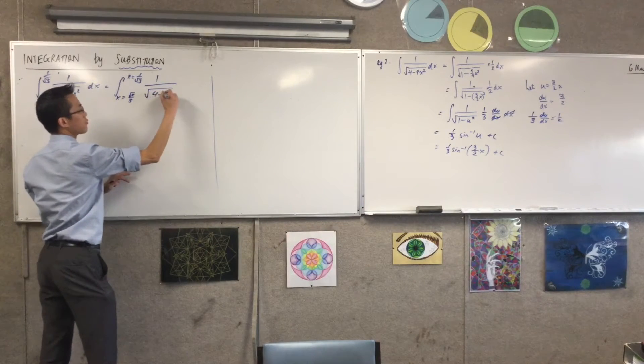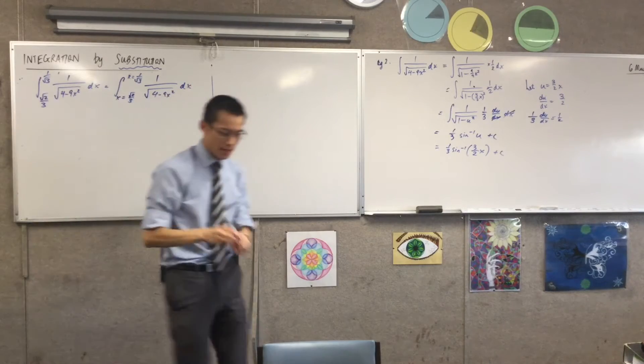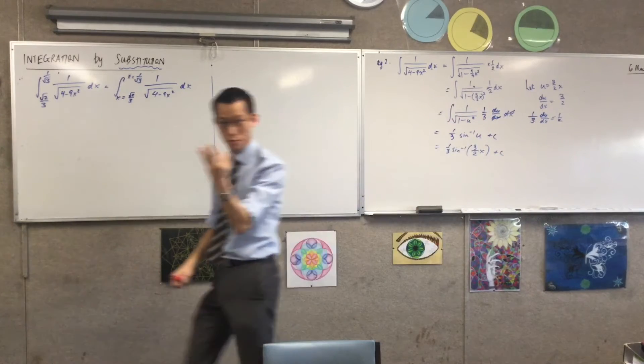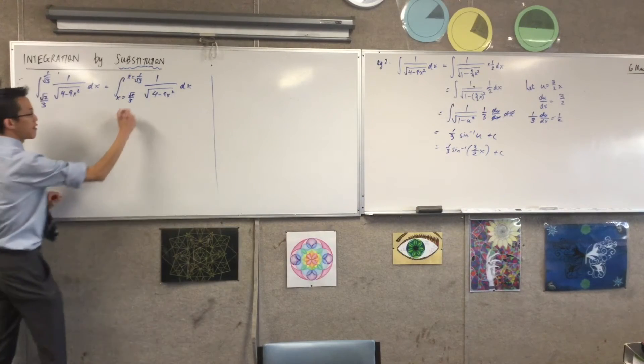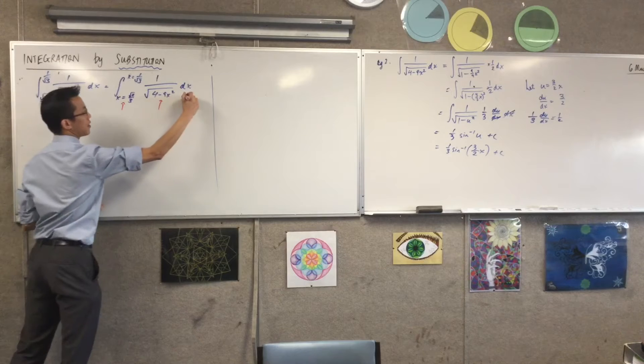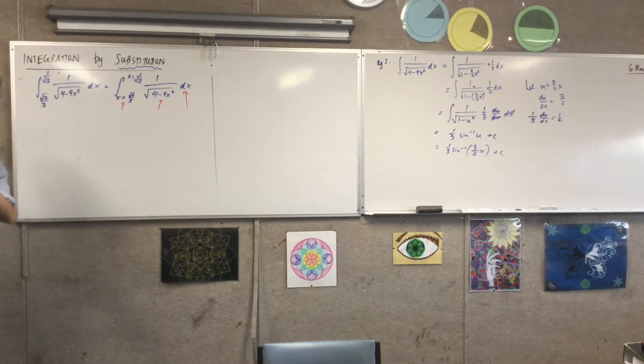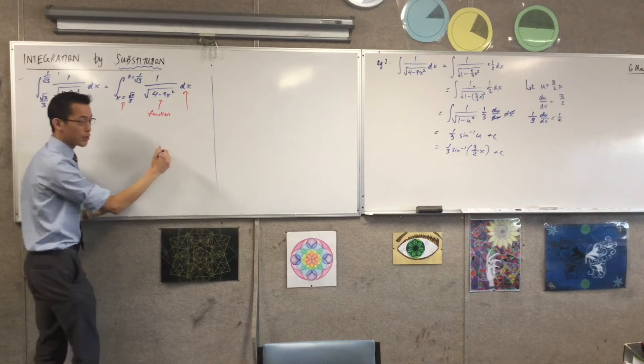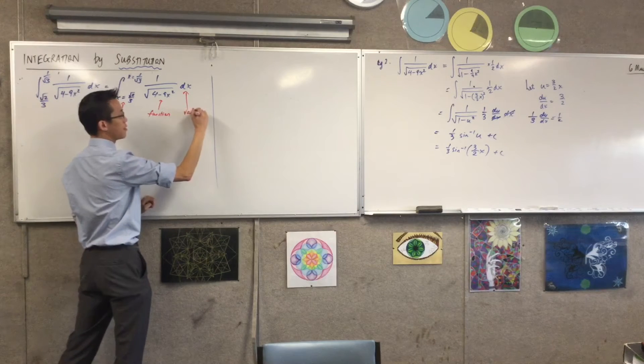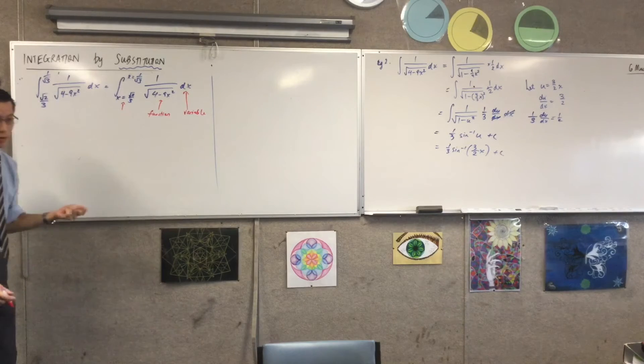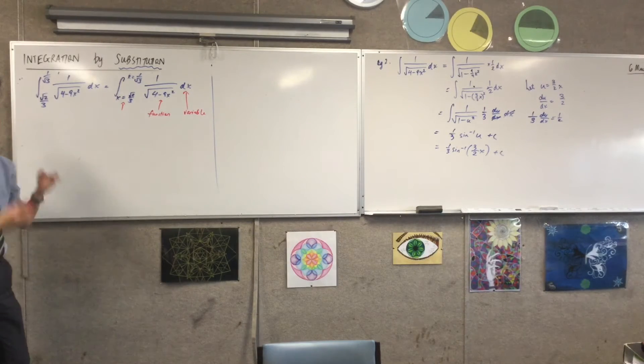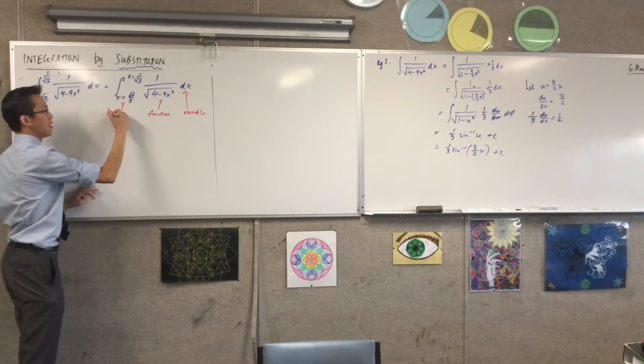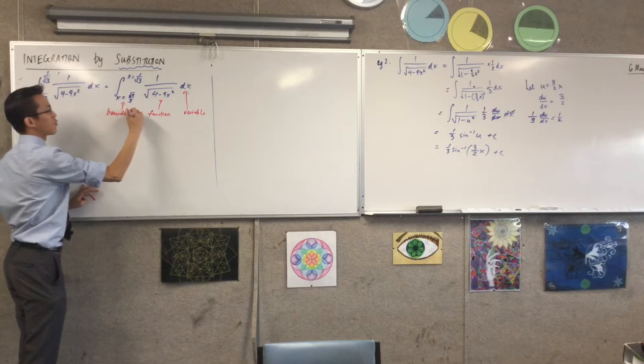Now, you can see there's not two things - function variables, function variables - that you need to change, there are three. Let's highlight all of them right now: here, here, and here. The three things that you need to change are what we saw before: the function, that's the obvious bit; there's the variable you are integrating with respect to, we already saw how easy that was to work with; but the last bit, the bit that's so easy to miss, is these boundary values over here. These boundaries have to come along for the ride.